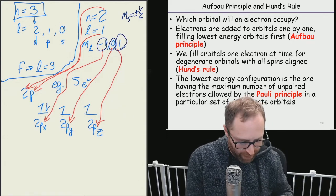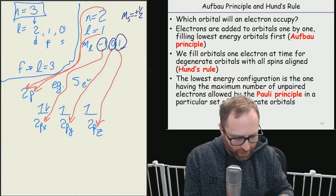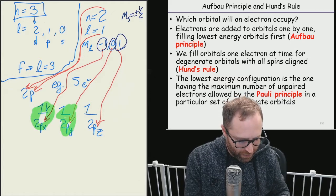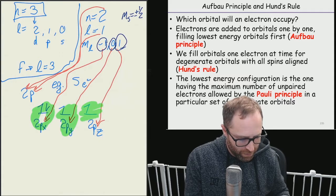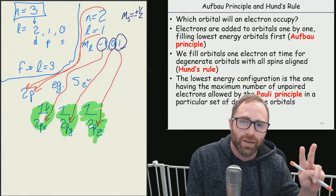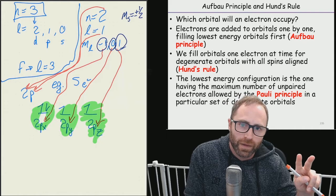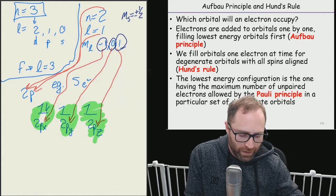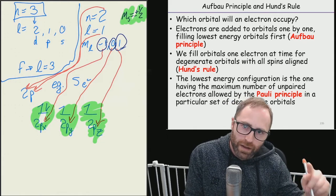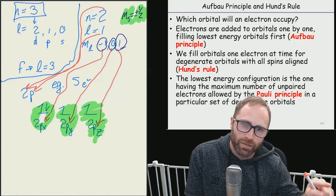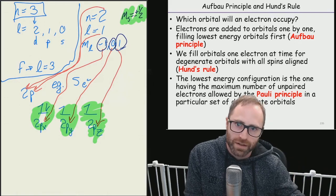So for every one of these subshells we can fit two electrons inside. That's the punchline, and that's because we can have an m sub s of positive one half or negative one half, so two electrons can fit.